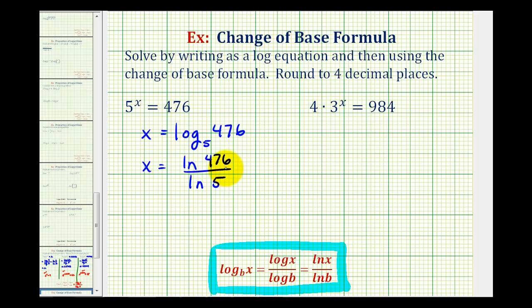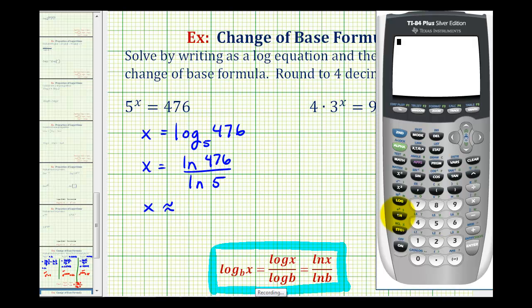We'll go to the calculator and determine the approximate value of x. Natural log 476 divided by natural log 5. So x is approximately 3.8308.